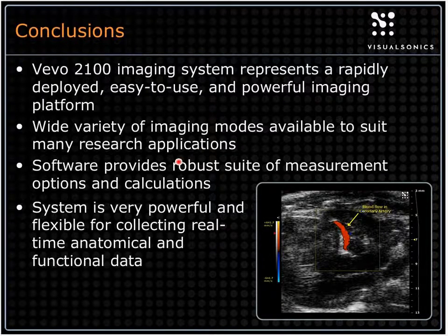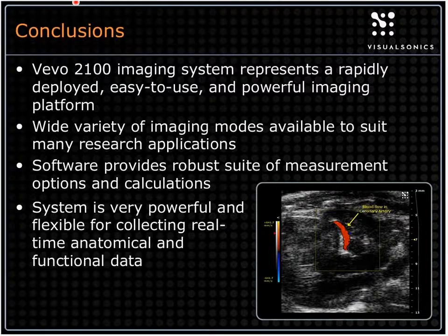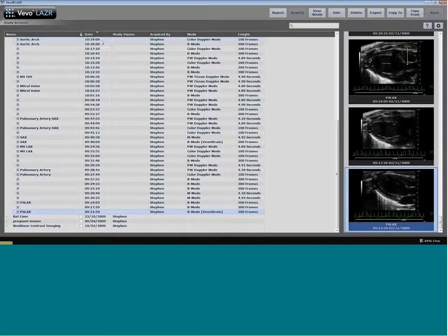That concludes the PowerPoint portion. We had a very quick, basic overview of the 2100, covering B-mode, color Doppler, pulse wave Doppler, VivoStrain, and some image settings. I'll move into the Vivo software right now. This is the Vivo 2100 software for post-analysis.